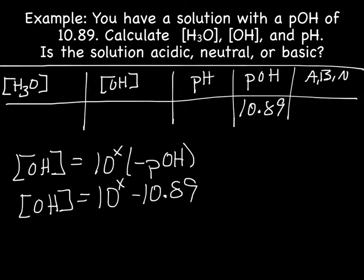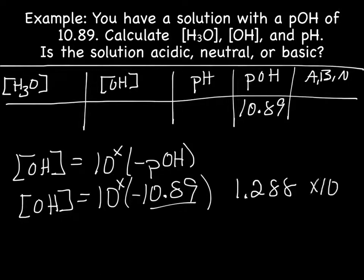Putting that into our calculators, that gives us 1.288 with sig figs, four sig figs, times 10 to the negative 11. And that's our concentration of OH. So we have 1.288 times 10 to the negative 11.